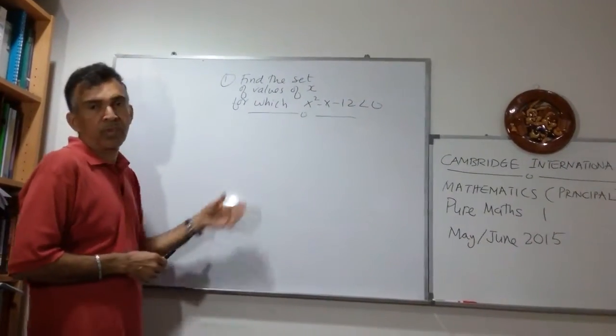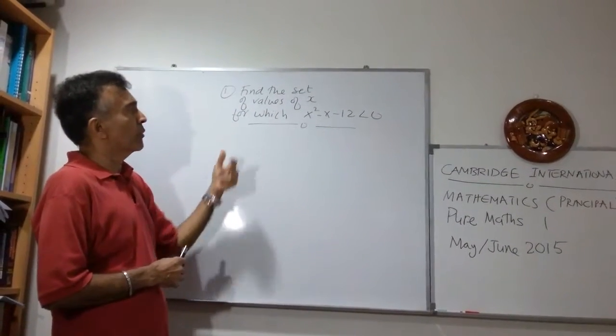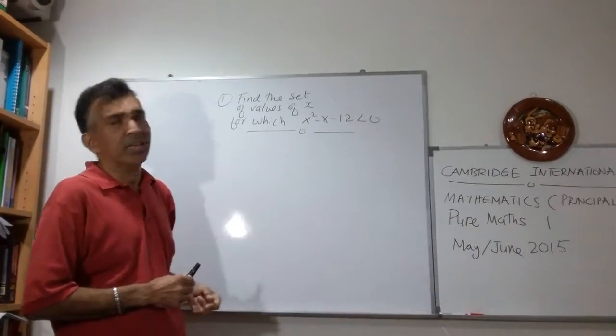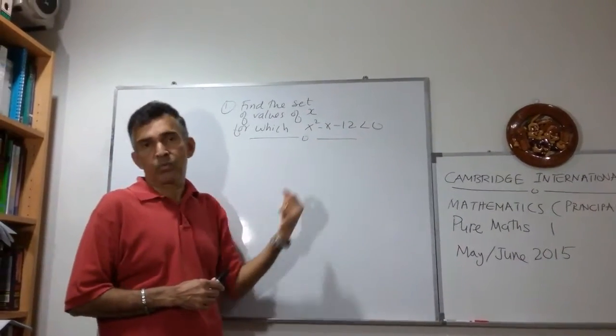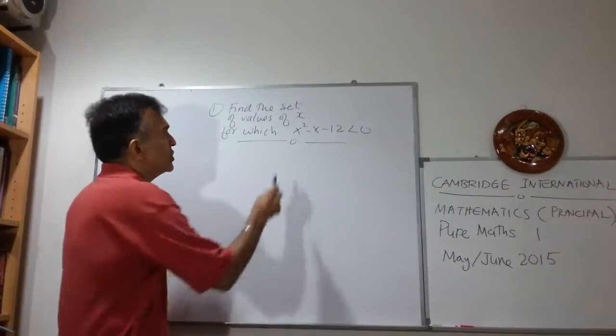Question number one. We're asked to find a set of values of x for which x squared minus x minus 12 is less than 0. In other words, we are asked to solve a quadratic inequality. So let's start.